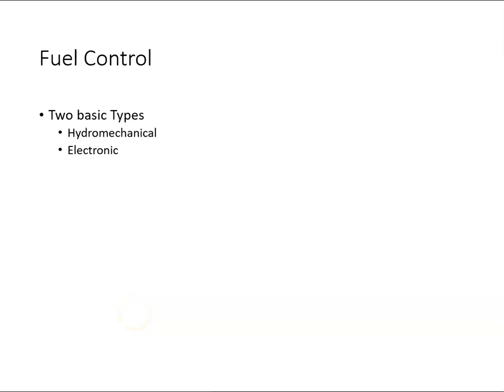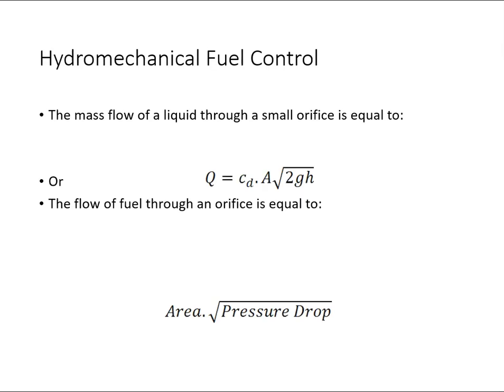On a gas turbine engine, fuel control is achieved using two basic types of control systems: one is the hydromechanical system and the other is an electronic system. The hydromechanical system is based around this formula.